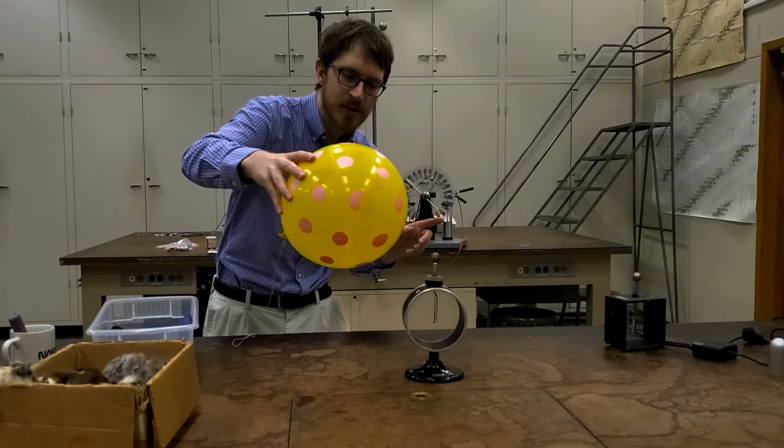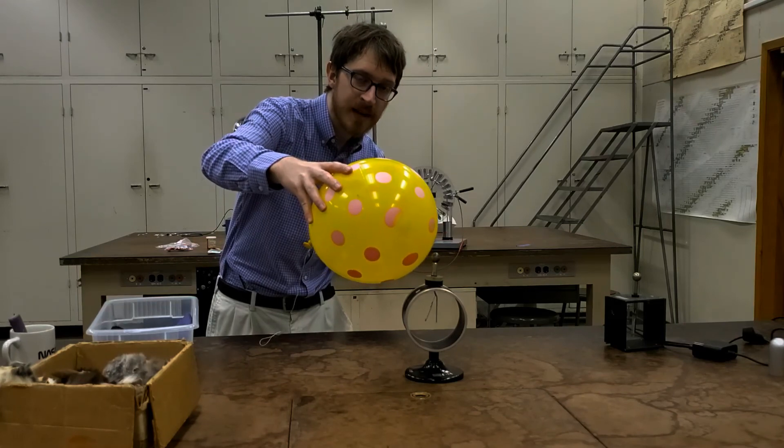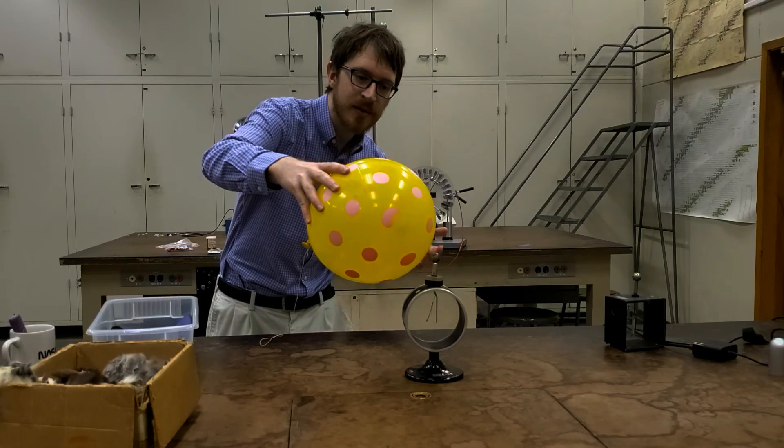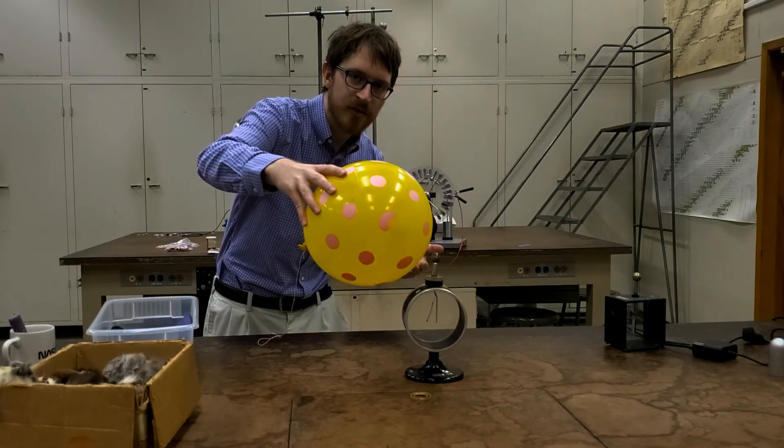And if I bring the balloon in even closer, leaves separate again. And we can think about what that means about where the charge is on this electroscope, and what its net charge is.